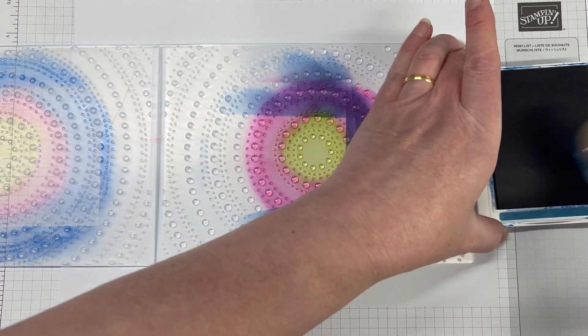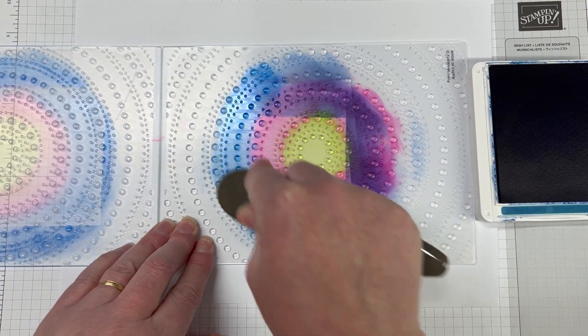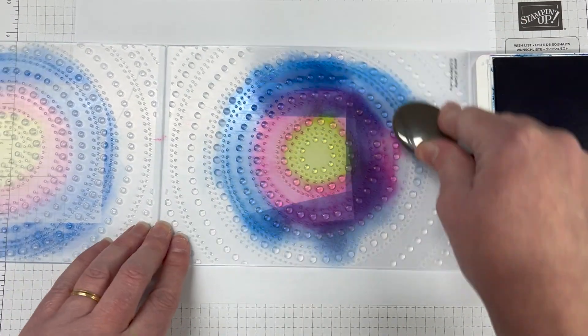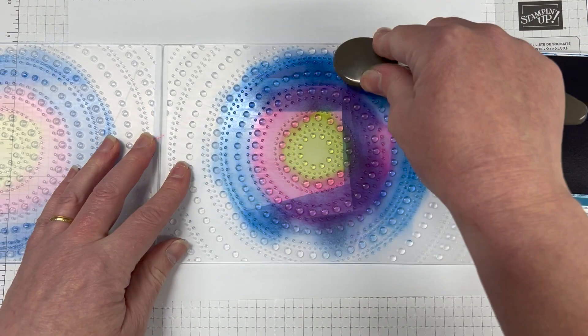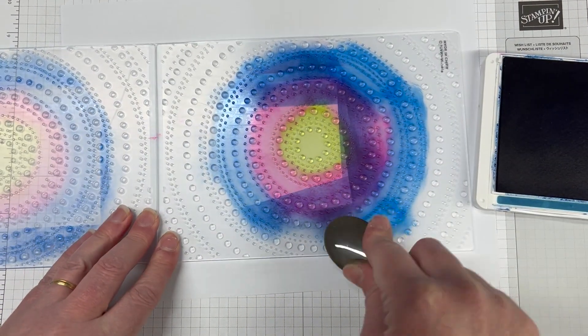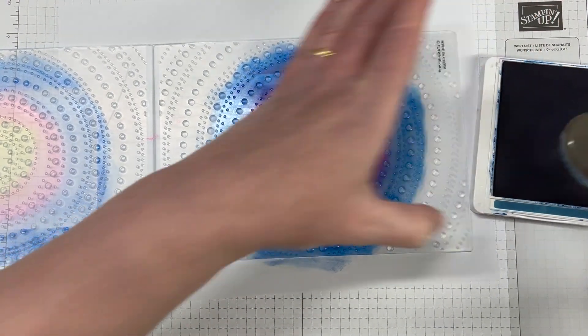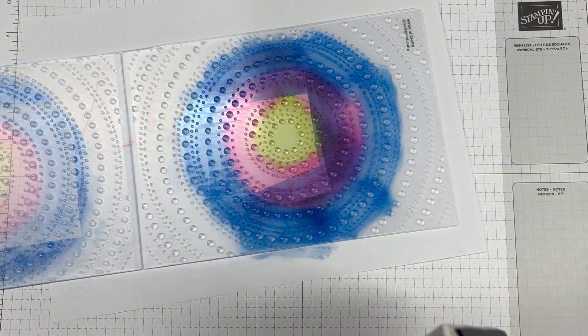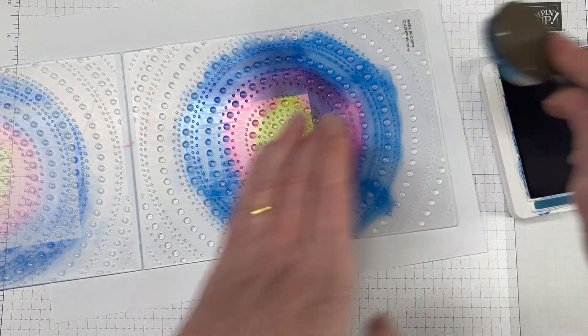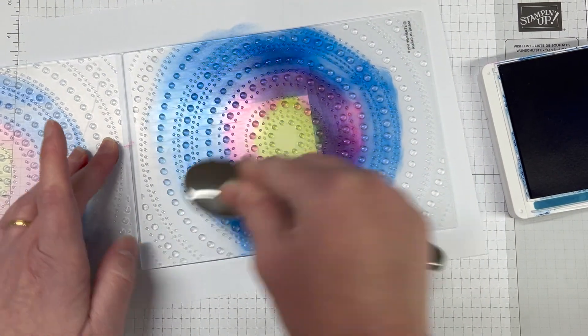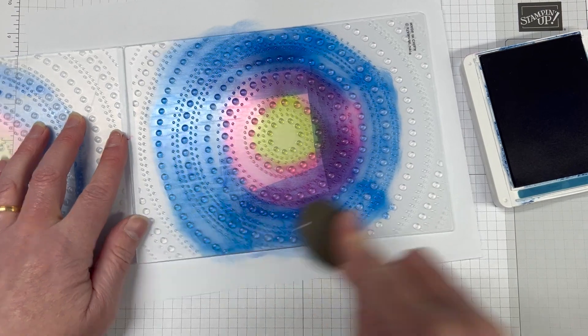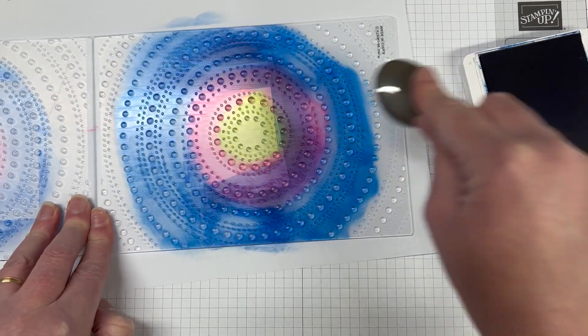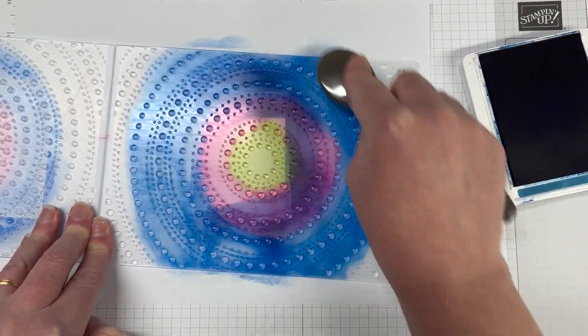When you see the two cards together, if you do the first style where you emboss first and then add colour, the colour is much more vibrant and beautiful. But if you add the colour to the embossing folder, it's a lot more subtle. So depending on what embossing folder you're using, for my card class we used the falling leaf 3D embossing folder with autumn colours like wild wheat and pretty peacock, and that technique looked really good.